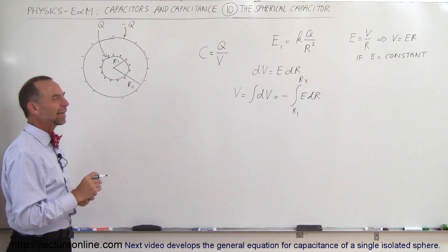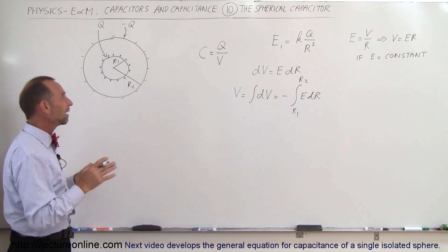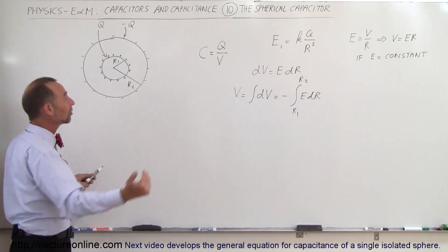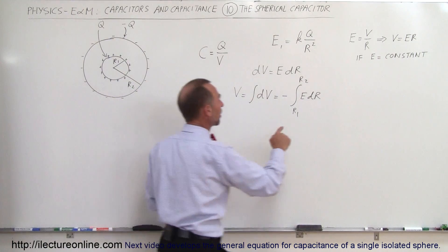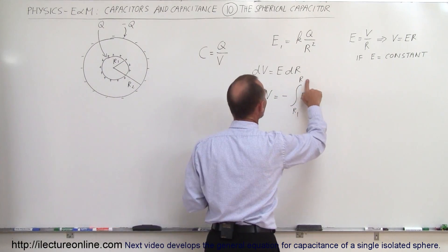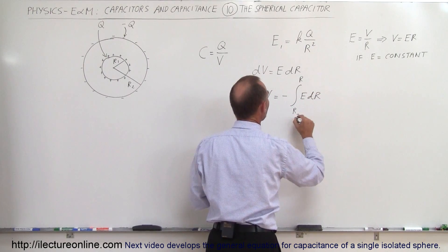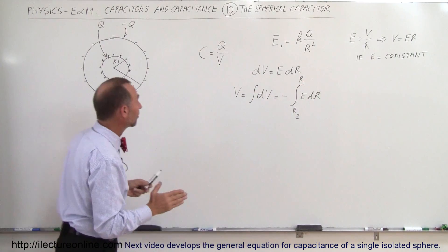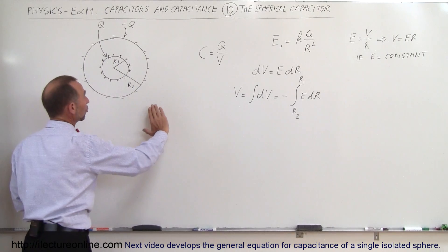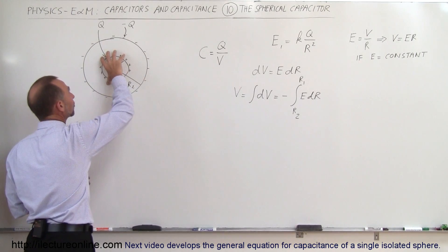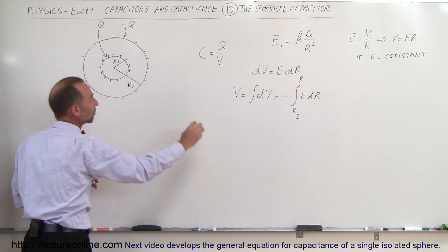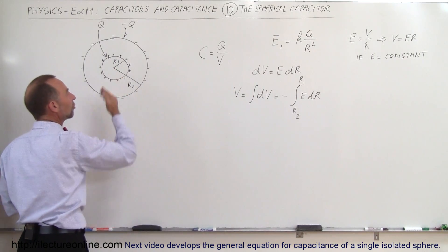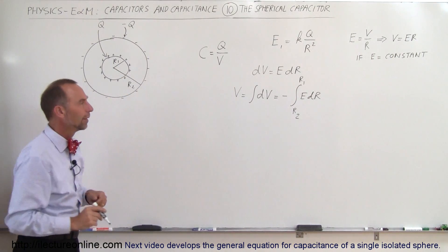Actually, by convention it's better to start on the outer radius and work inward, because that way the potential will be positive. So let's start from R2 and go to R1. That's a better choice, because when we have positive charge and move from a farther place to closer, the potential increases — and that's what we want.